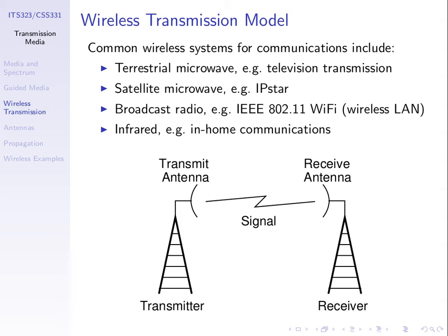A simple model of wireless transmission: we have a transmitter that generates an electrical signal, then we have an antenna. The antenna takes that electrical current and converts it to an electromagnetic wave that propagates through space at a particular range of frequencies — usually the radio and microwave range. That signal propagates through the air, or sometimes through water for underwater communications, and is received by another antenna, which converts it back to electricity. That received electrical current carries our data.